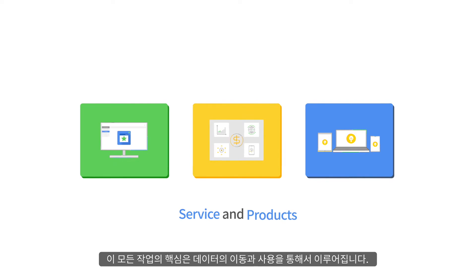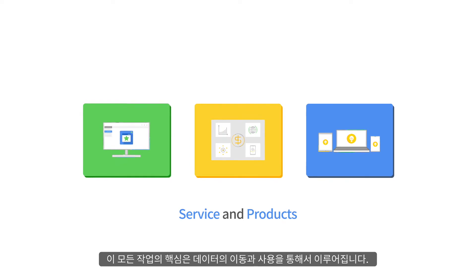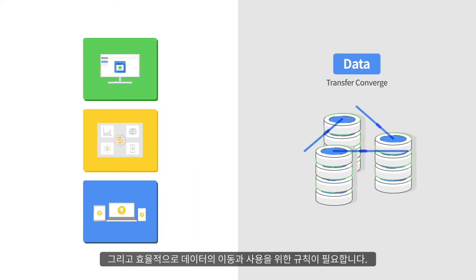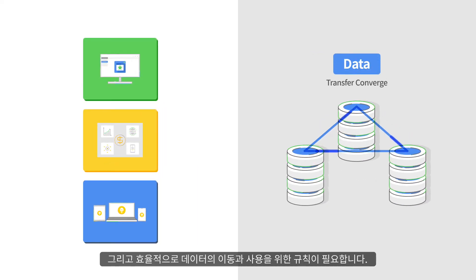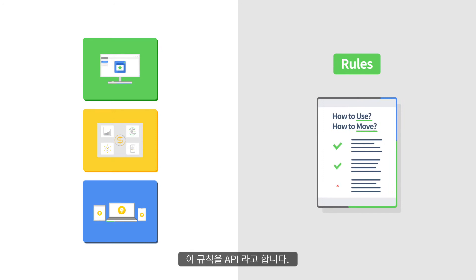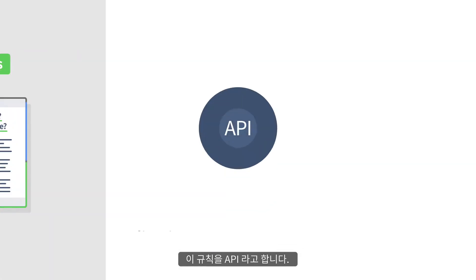The core of doing all this is moving and using data. And to efficiently move and use data, certain rules are needed. These rules are called APIs.